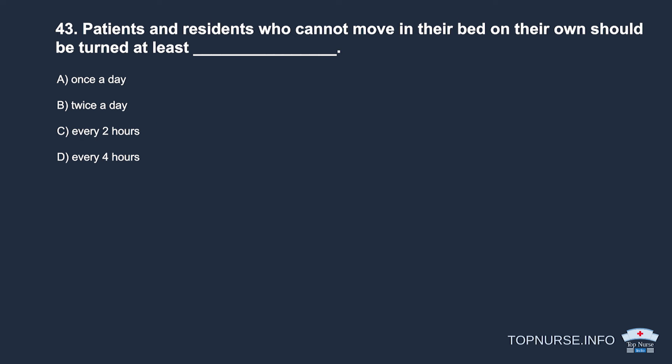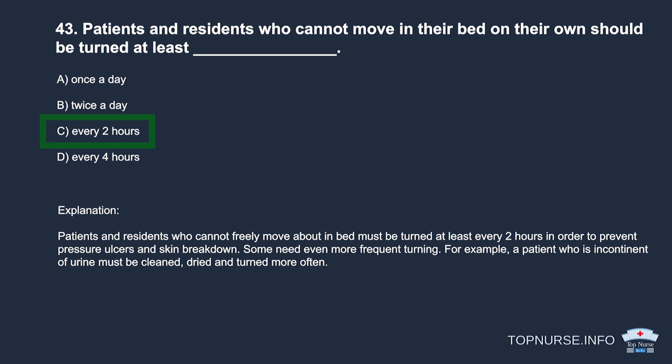Question 43: Patients and residents who cannot move in bed on their own should be turned at least: a. Once a day. b. Twice a day. c. Every two hours. d. Every four hours. Correct answer: c. Every two hours. Patients who cannot freely move must be turned at least every two hours to prevent pressure ulcers and skin breakdown. Some need even more frequent turning — for example, incontinent patients must be cleaned, dried, and turned more often.